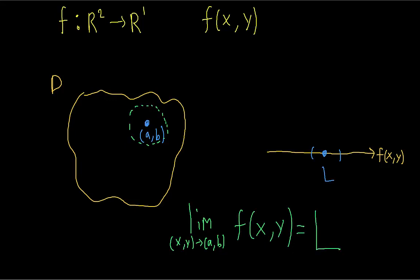Notice that now, since our domain is two-dimensional, instead of just an interval around some point, we have a disk around the point. If this limit exists, then we must be able to make some disk around the point (a, b) such that for all of the values of x and y inside this disk, the value of the function is very close to l. So you can see that it's basically the same idea, just with a two-dimensional domain.